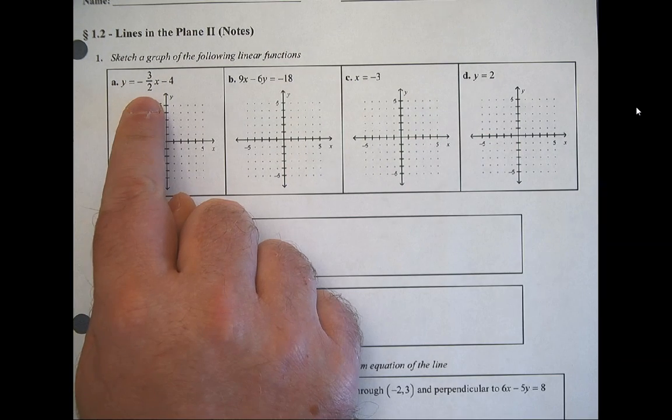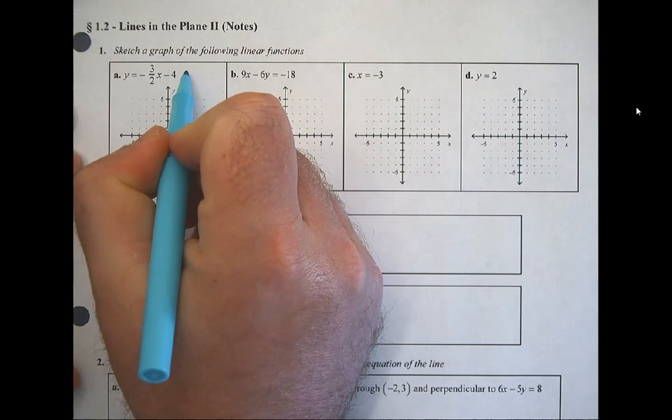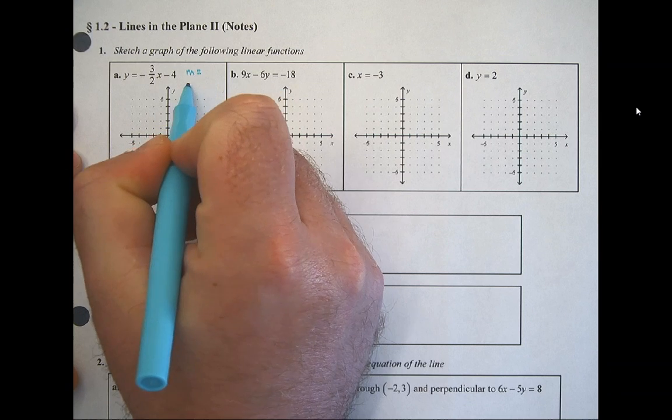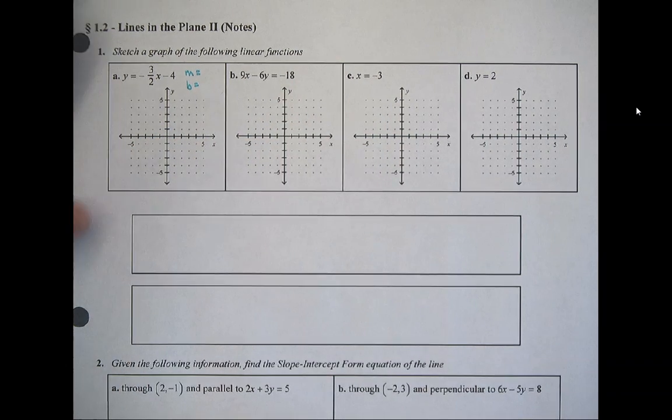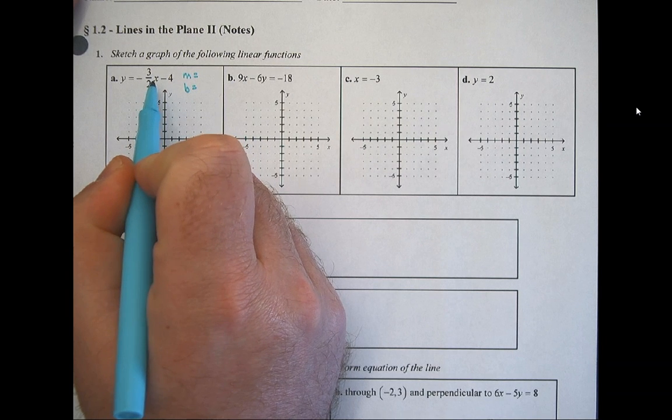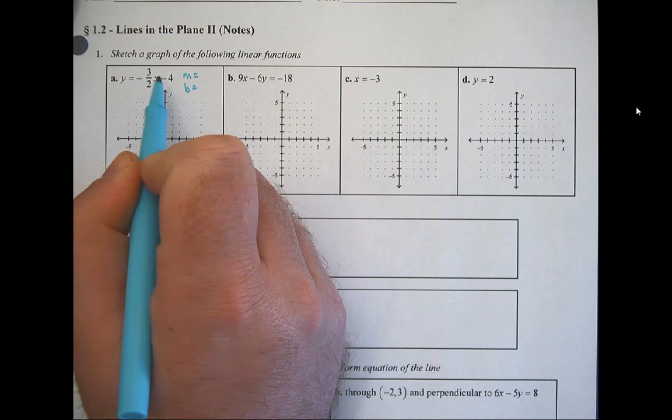If you remember, this form is called slope-intercept form. Slope-intercept form tells us two things: it tells us the slope and it tells us the y-intercept. We use the letter b to indicate the y-intercept. Our slope is whatever is connected to x. 99% of the time it will be written in this format, y equals mx plus b.